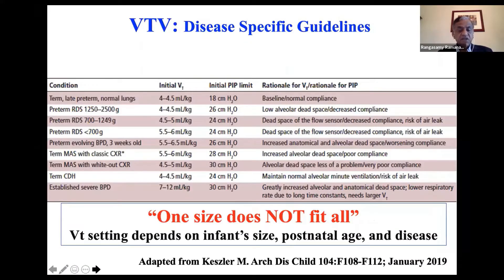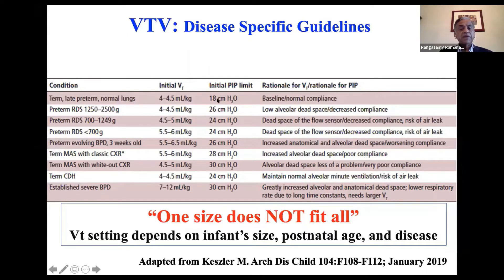Marty Kessler wrote a nice review article in 2019, saying one size does not fit all. For term and late preterm babies with normal lungs, the initial tidal volume is 4 to 4.5 mL per kilo, and the initial PIP is limited to 18 centimeters.